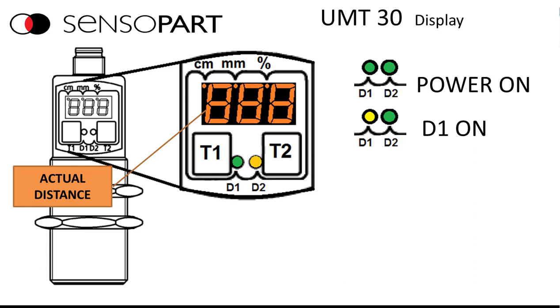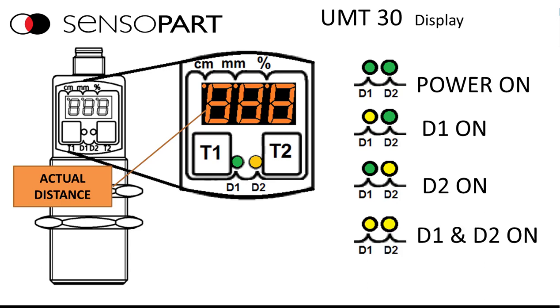Here D1 is on, it turns yellow. Here D2 only is on, it's yellow. Here both D1 and D2 are on.